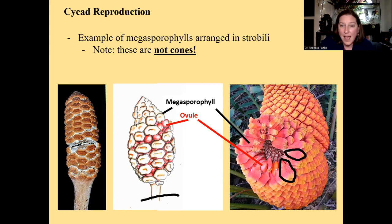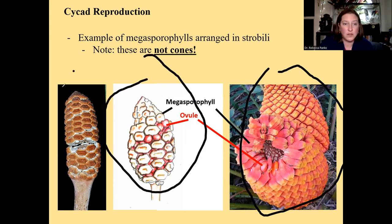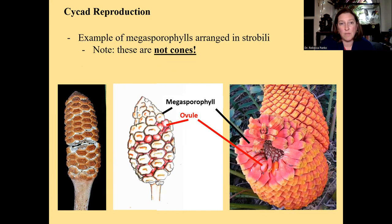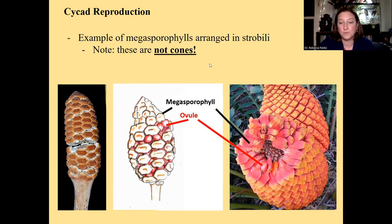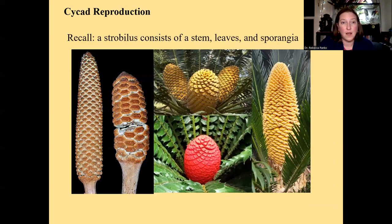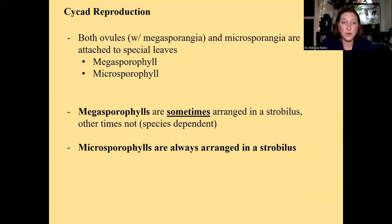This whole thing is a strobilus — with megasporophylls on it. Note that these are not cones. Cones are in the conifers — these are strobili. Here's an example of megasporophylls arranged in a strobilus, and here is a different species whose megasporophylls are in a crown of fertile leaves, located at the top or crown of the tree. The megasporophylls in the crown of fertile leaves look more leaf-like compared to the oyster-cracker-shaped ones on a strobilus.